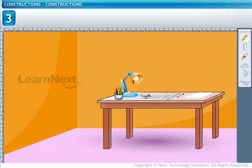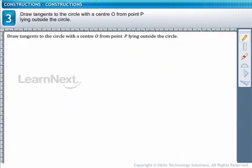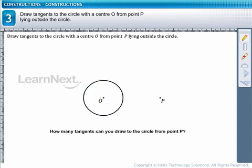Now, let us learn how to draw tangents to a circle from an external point. Draw tangents to the circle with a center O from point P lying outside the circle. How many tangents can you draw to the circle from point P? Only two. You can draw only two tangents to a circle from an external point.